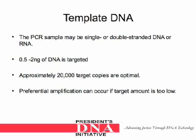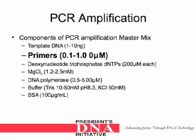The template DNA is the area of DNA that needs to be copied. The PCR sample may be single or double-stranded DNA or RNA, and usually 0.5 to 2 nanograms of DNA is targeted. Approximately 20,000 target copies are optimal, and preferential amplification can occur if the target amount is too low. The next component of the PCR amplification master mix are the primers, which have a concentration between 0.1 to 1.0 micromolars.